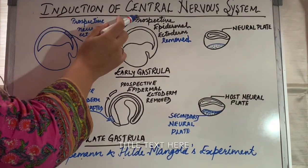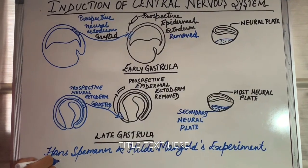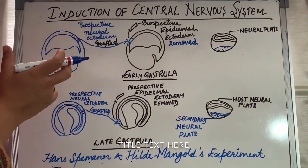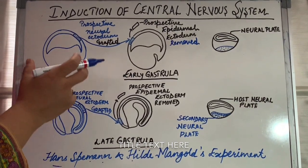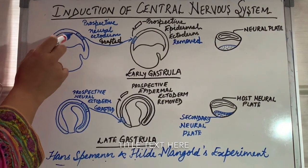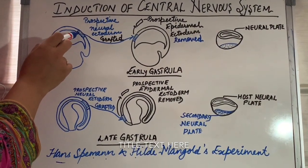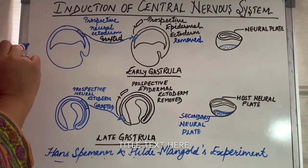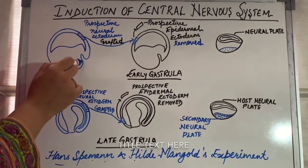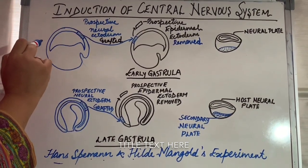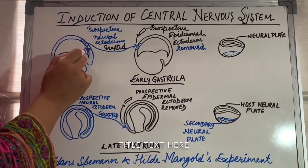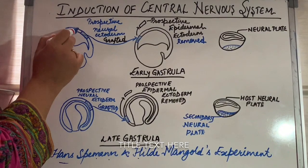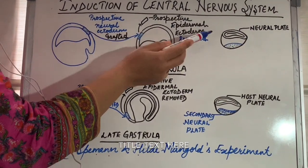Now we will discuss the induction of the central nervous system. An experiment was conducted by Hans Spemann and Hilde Mangold, in which they discovered that the dorsal mesoderm — which is formed from the dorsal vegetal cells — when it comes in contact with the ectoderm, differentiates it into the neural tissue, and the neural plate is formed from the ectoderm. If you remember gastrulation in amphibians — it occurs by involution. As the notochord and precordal plate undergo involution and come into contact with the ectoderm, they induce the ectoderm to differentiate into the neural plate.